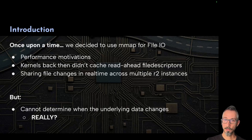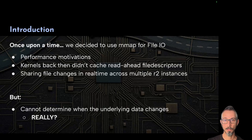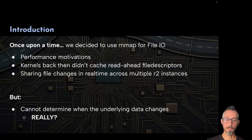Let me introduce you to the MMAP story. Once upon a time, we decided that using MMAP was a good idea for reading files from disk, because this was giving us some read-ahead optimizations, and it was possible to use just pointers instead of having to use different syscalls just for reading portions of memory. This was reducing the amount of syscalls that we were doing, but it was also moving all the overhead to the MMU, which was loaded with many other issues we didn't think about at the time.